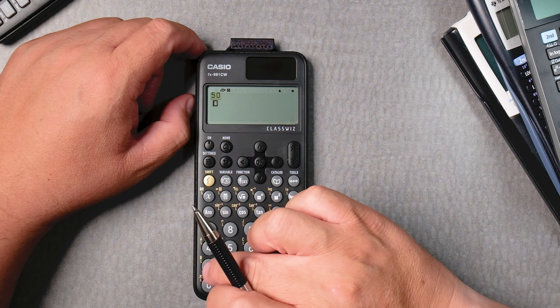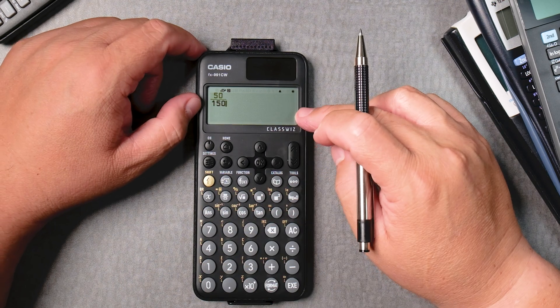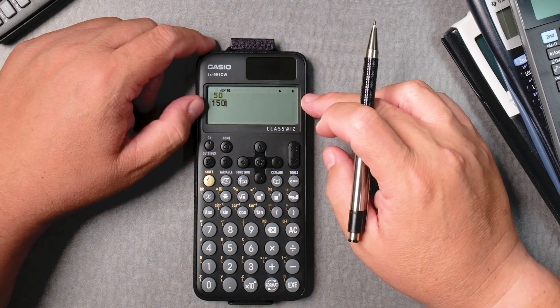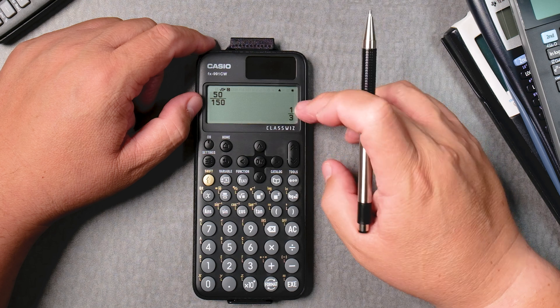Let's say we have fifty over one hundred fifty. We use the fraction button and I want to reduce. Exe button, one third.